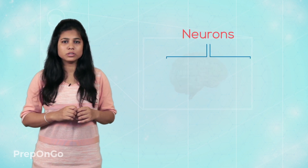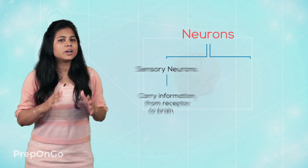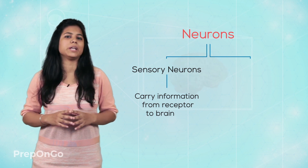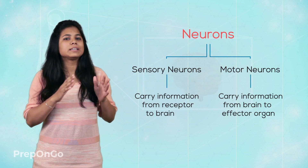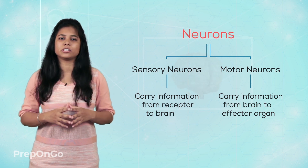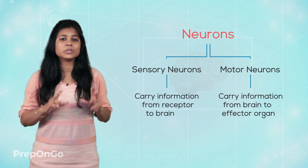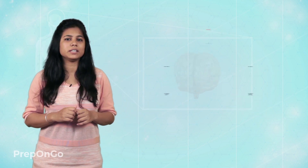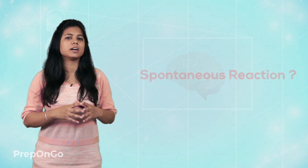The brain only makes decisions based on what we have experienced in the past, so that it has a comparison to draw from. Another important point to note is that there are two different types of neurons which carry information. The first are the sensory neurons, which transfer information from the receptor to the brain, and the second are the motor neurons, which carry signals from the brain to the effector organs. So, we have seen that the brain is the mastermind for all the functions which happen in our body. But there are some actions which need a spontaneous reaction. We will be seeing these spontaneous reactions and how they occur in the next video.